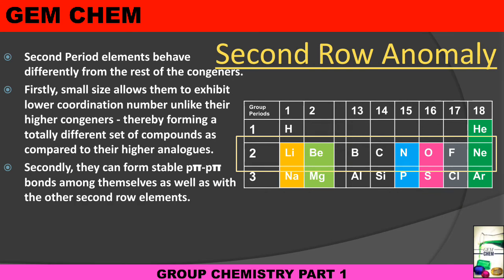And the last thing which is important to understand why second row anomaly occurs is that we know that Period 2 elements do not have any d orbitals. There is an absence of energetically